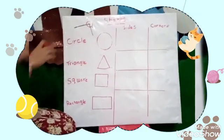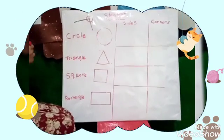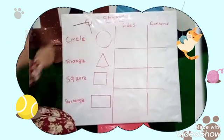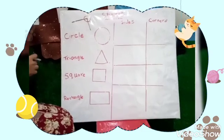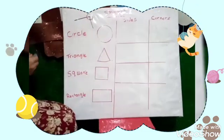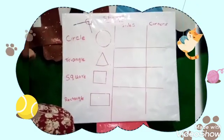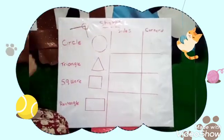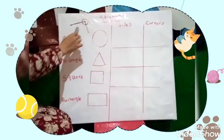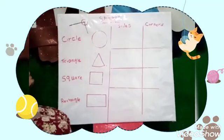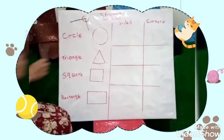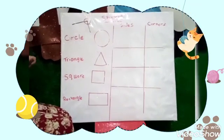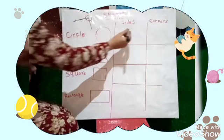Good. Now let's look at the circle. The circle — how many sides does a circle have? Zero. Zero. And the round shape is called a curved line. So the straight side has zero, and the curved line — how many? Zero.